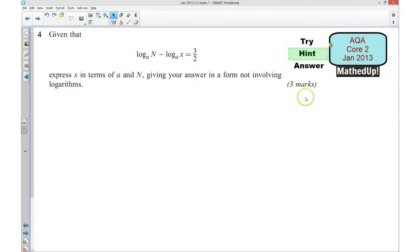Did you manage to have a go at that? This next part I'm going to give you a hint as to how you can go about answering the question if you're unsure. Now we want to express x in terms of a and N, giving your answer in a form not involving logarithms. So my clue to you here is to think about how you could write this as a single logarithm first of all and then think about how you can rearrange this to eliminate the logarithm.